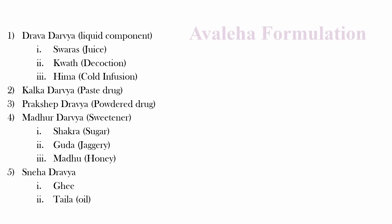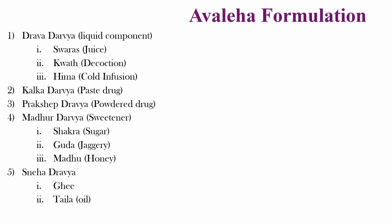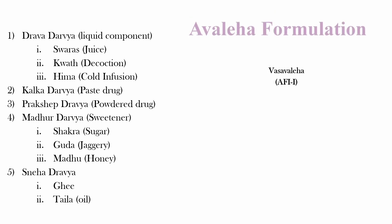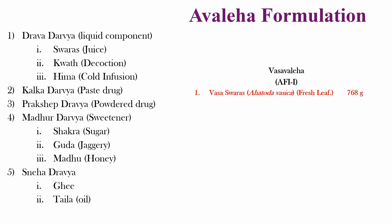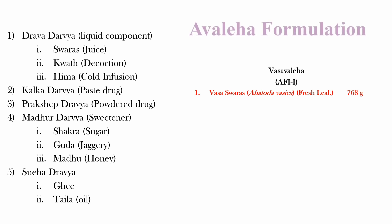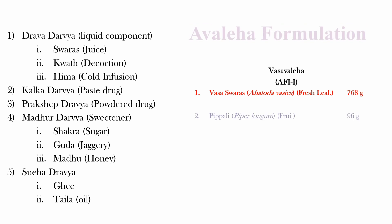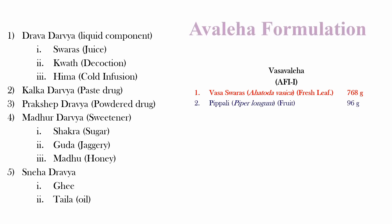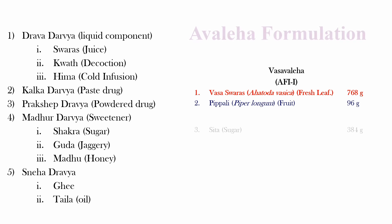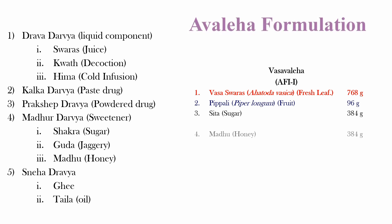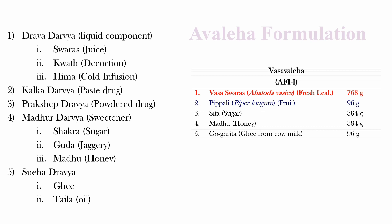This can be better visualized by an example of Avaleha formulation, such as Vasa Avaleha. In Vasa Avaleha, the liquid component is Vasa Swaras. It has no Kalka Dravya. The Prakshepa Dravya here is Pipli. The sweetening agents or Madhura Dravya in Vasa Avaleha are sugar and honey. And the Sneha Dravya here is ghee.